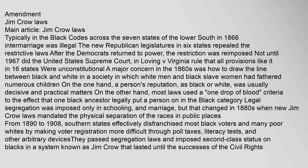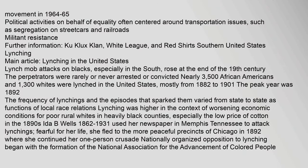Legal segregation was imposed only in schooling and marriage initially, but that changed in the 1880s when new Jim Crow laws mandated the physical separation of the races in public places. From 1890 to 1908, Southern states effectively disenfranchised most black voters and many poor whites by making voter registration more difficult through poll taxes, literacy tests, and other arbitrary devices. The passed segregation laws imposed second-class status on blacks in a system known as Jim Crow that lasted until the successes of the civil rights movement in 1964–65.